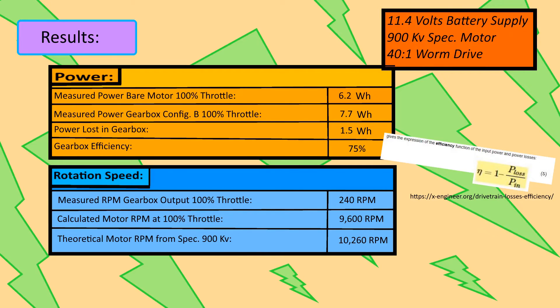In an unloaded theoretical state, the 900 KV motor should be turning around 10,260 RPM at the same voltage, so as a gut check, a 7% deviation between theoretical and measured gearbox speed seems like it's acceptable.